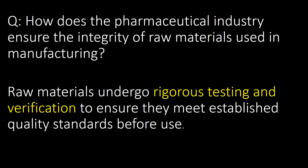How does the pharmaceutical industry ensure the integrity of raw materials used in manufacturing? Raw materials undergo rigorous testing and verification to ensure they meet established quality standards before use.